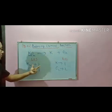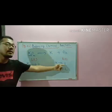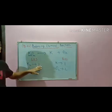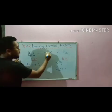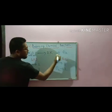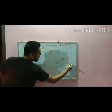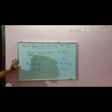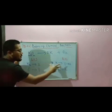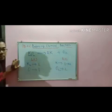Potassium: two on LHS, one on RHS — they are not balanced. If I put a coefficient of two on the RHS, it will become two. Potassium is balanced now.